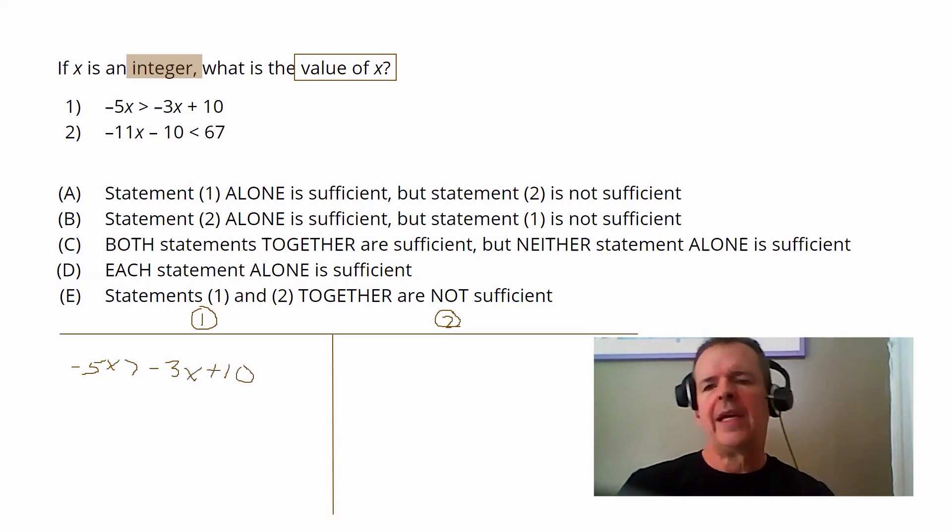So I tend to like to combine terms in such a way so that I get to work with positive values that I don't have to divide by a negative if I can help it. So to me, I want to get all the X terms on the same side. So I'm going to add five X to each side and then isolate X. What I'll do then is also subtract a 10 from each side.